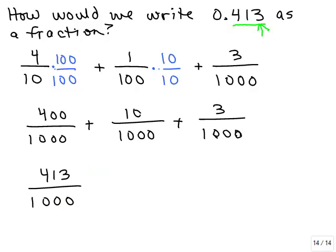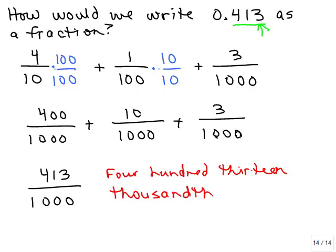So if we wanted to write this in words, we would say 413 thousandths. So you just read the whole number, 413. And then three places after the decimal means we're thousandths, and remember to put the th. Let's try one more like that.